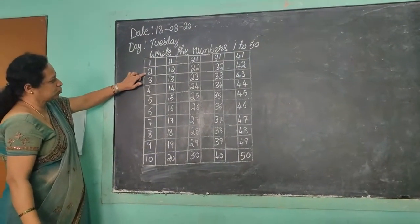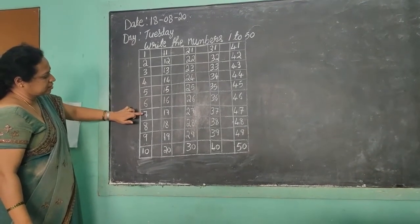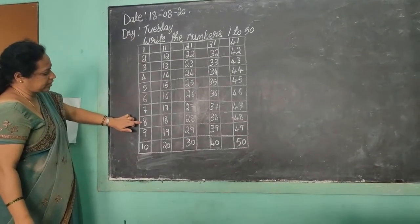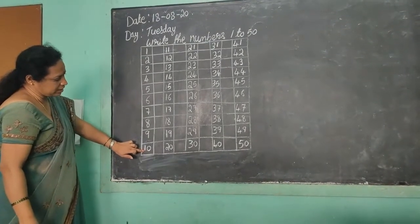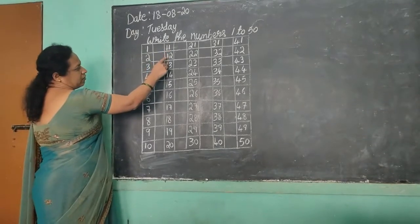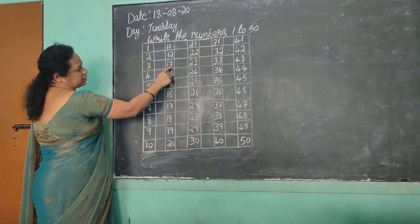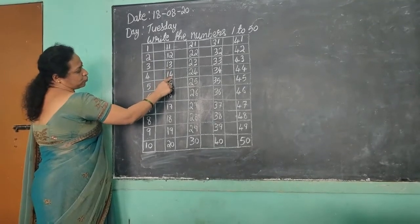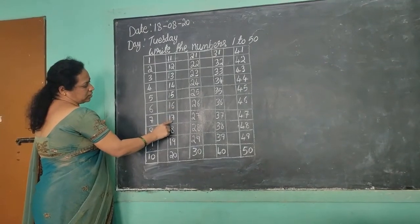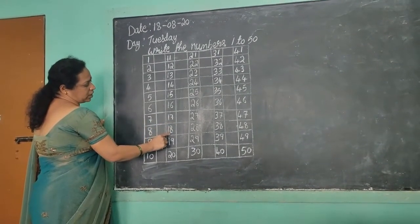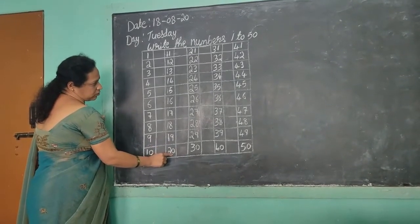1, 2, 3, 4, 5, 6, 7, 8, 9, 10. 1, 1 — 11. 1, 2 — 12. 1, 3 — 13. 1, 4 — 14. 1, 5 — 15. 1, 6 — 16. 1, 7 — 17. 1, 8 — 18. 1, 9 — 19. 2, 0 — 20.